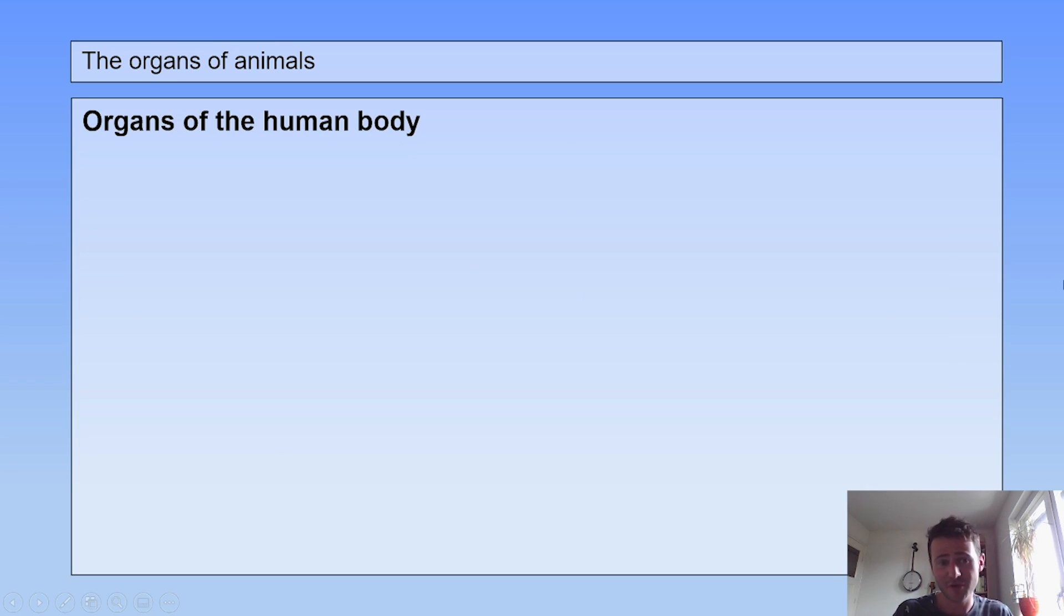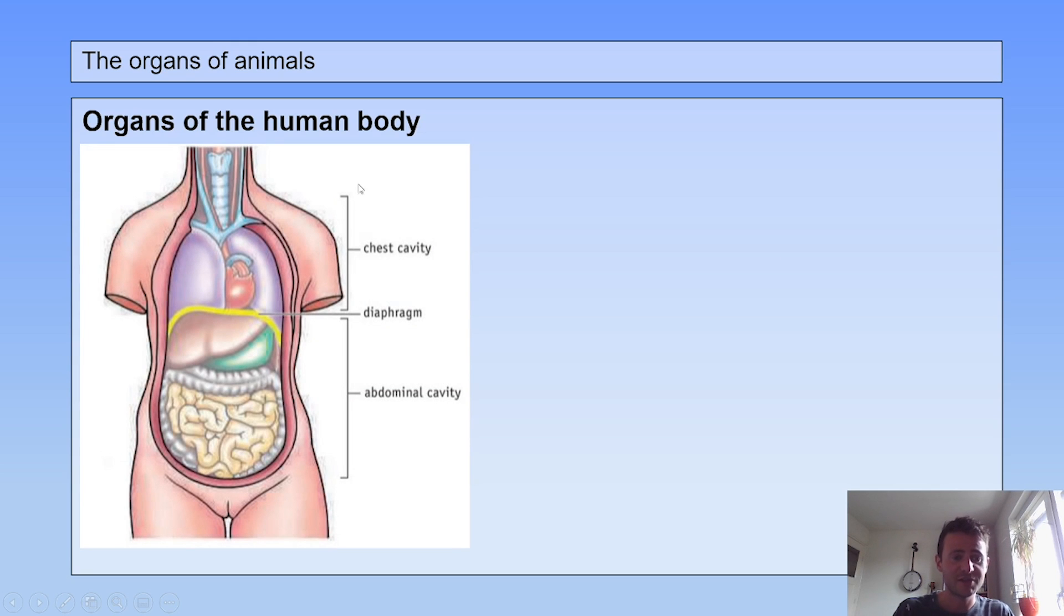Then the organs of the human body. This is the torso. The torso is divided in the chest cavity and the abdominal cavity, and the organ that separates them is called the diaphragm. There are a few organs that can travel through the diaphragm. The esophagus, for example, but also the blood vessels.